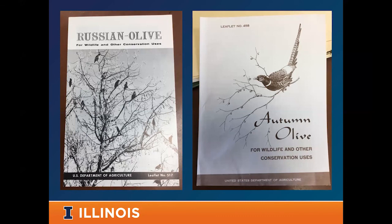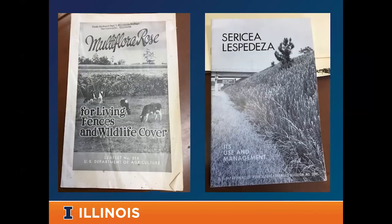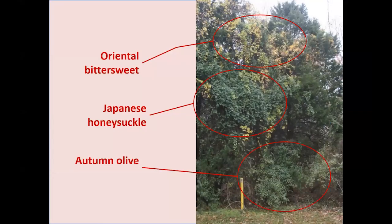We're dealing with species in our forests now like autumn olive that came here intentionally for a purpose — sericea lespedeza for erosion control, multiflora rose for agriculture. We have a checkered past with some of these invasives. But now these and many others are out on the landscape and in our forests, often growing together and impacting the natives that we value.